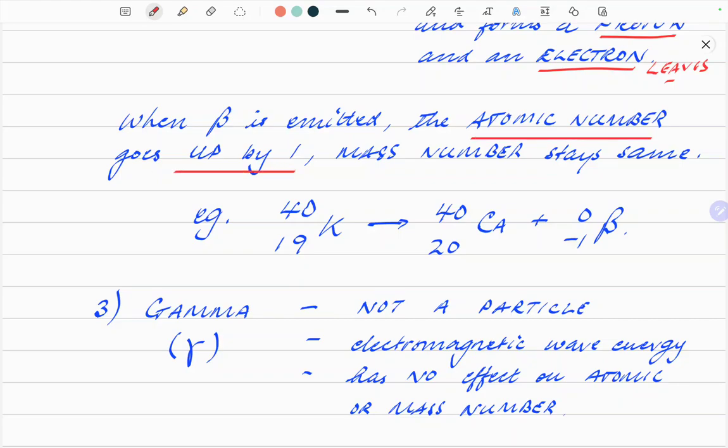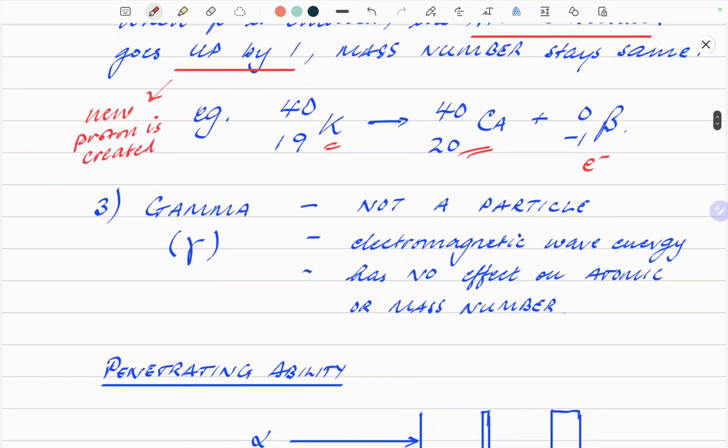An example of that is radioactive potassium will decay into stable calcium and emit a beta particle. So that's basically an electron that's flying around at very high speed.